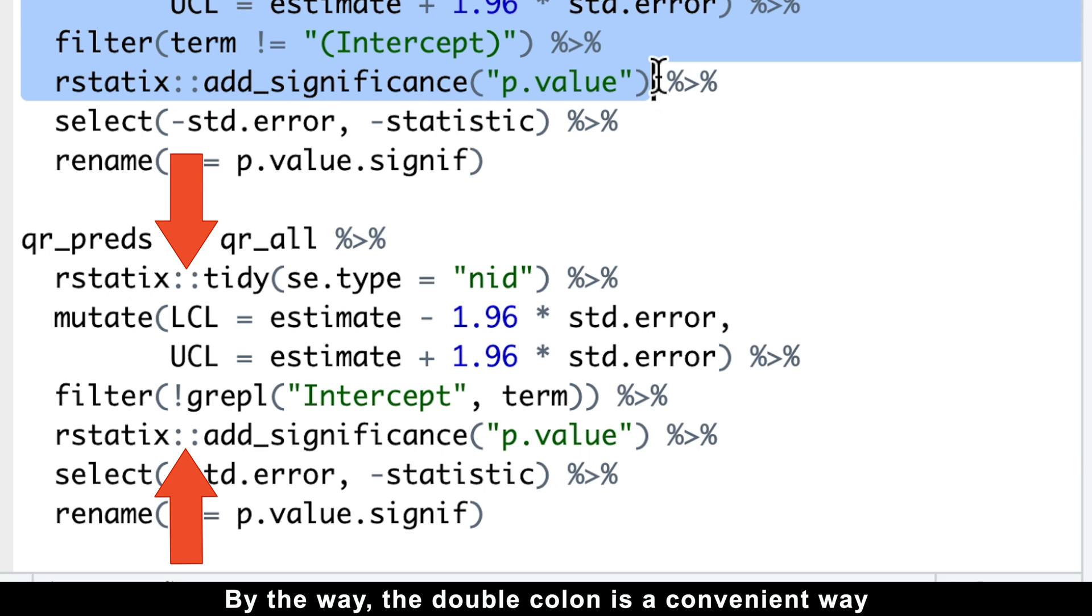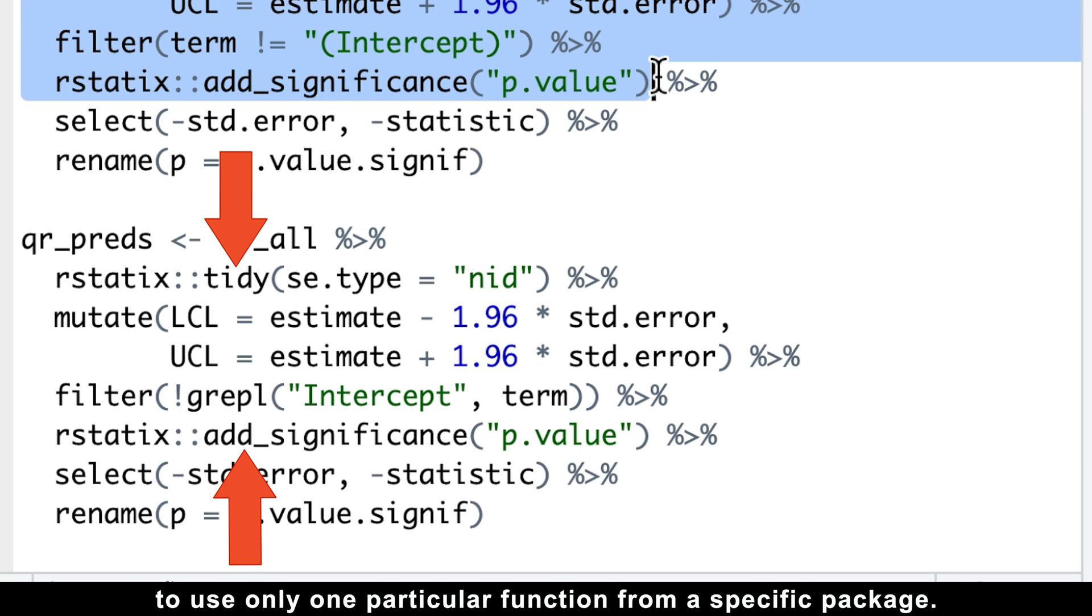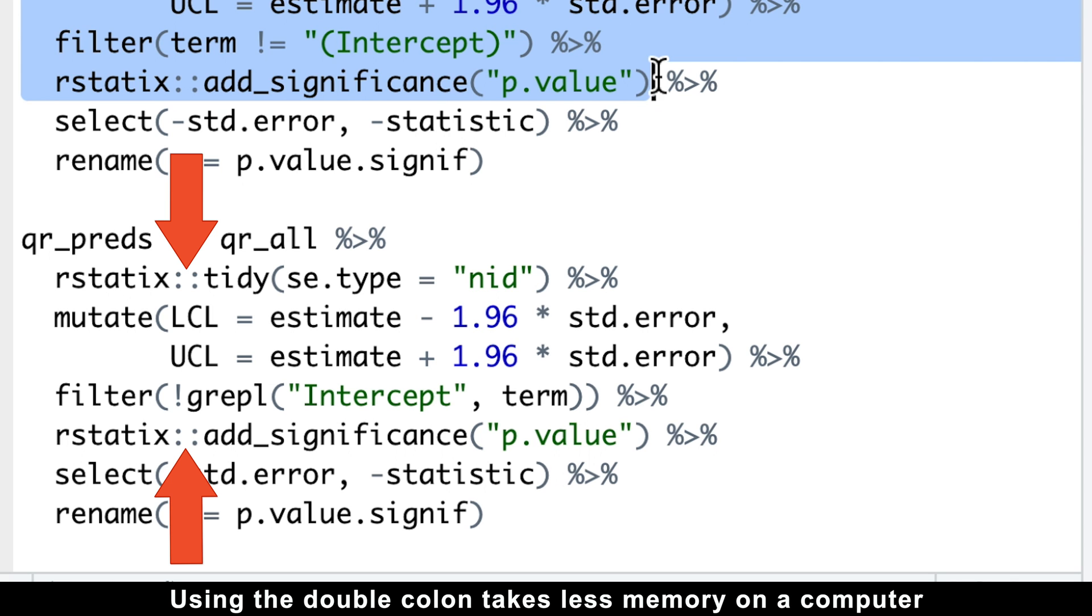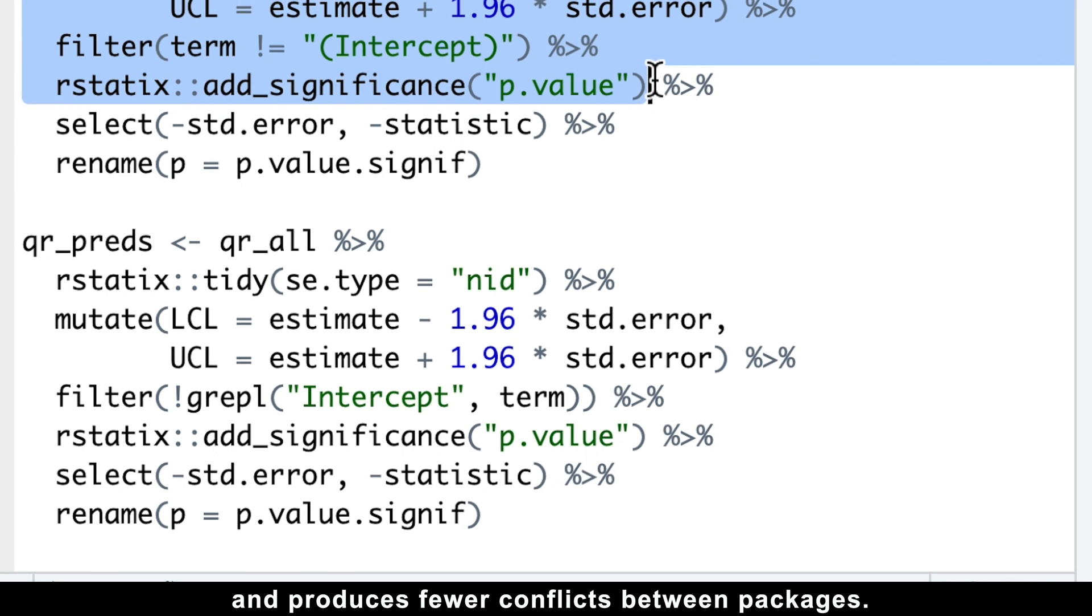By the way, the double colon is a convenient way to use only one particular function from a specific package. For instance, in this case, I don't need to use the rstatics package anymore. Using the double colon takes less memory on a computer and produces fewer conflicts between packages.